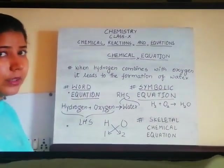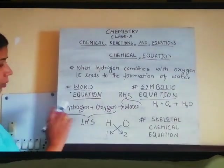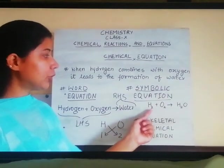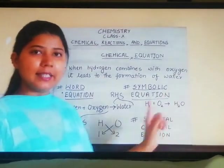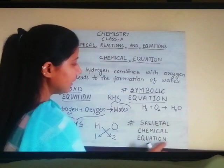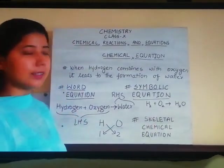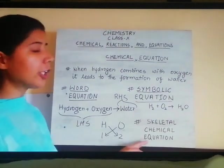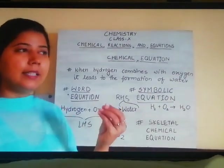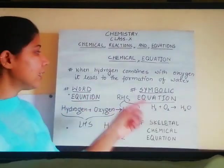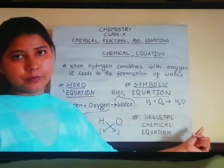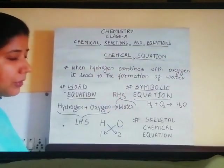This kind of equation is known as symbolic equation, using symbols. H2 plus O2 will give you H2O. The other way, you are calling this symbolic equation as the skeletal chemical equation. That means the chemical equation which is giving you the relative information, the basic information about the reaction that what you need to make water.